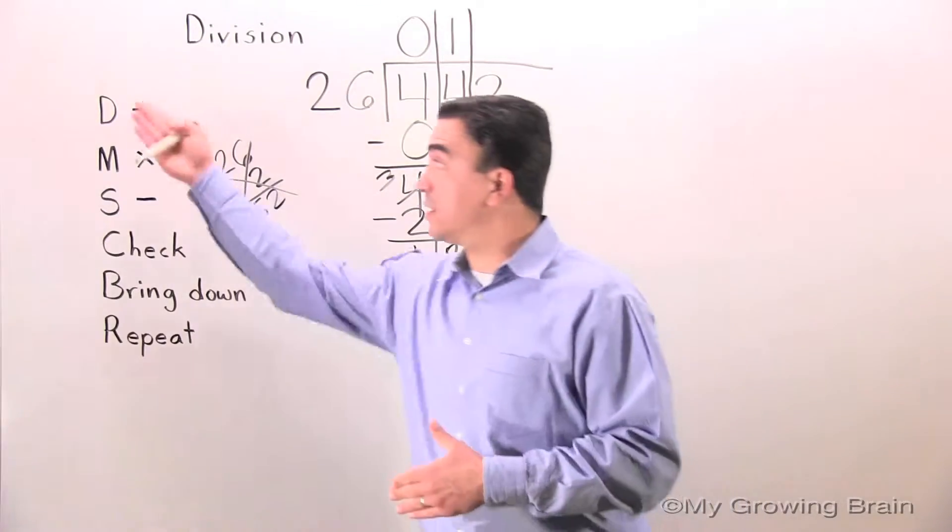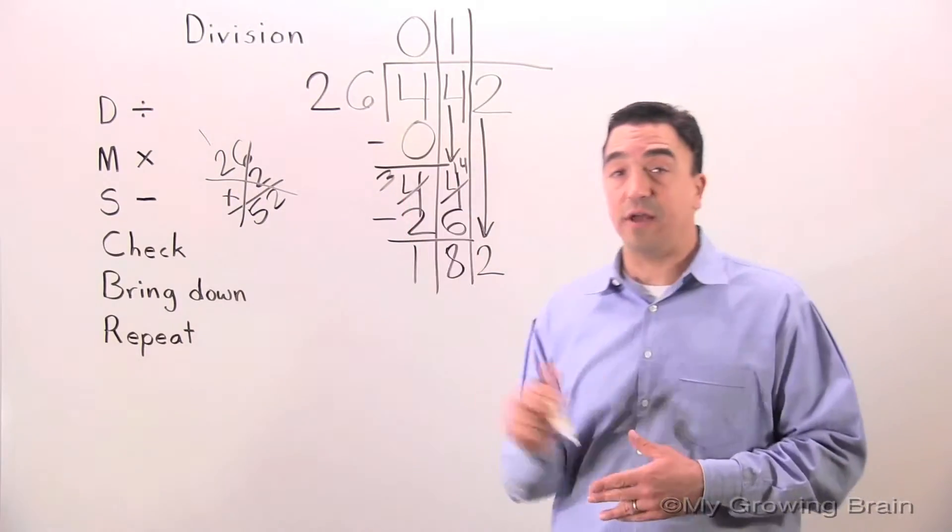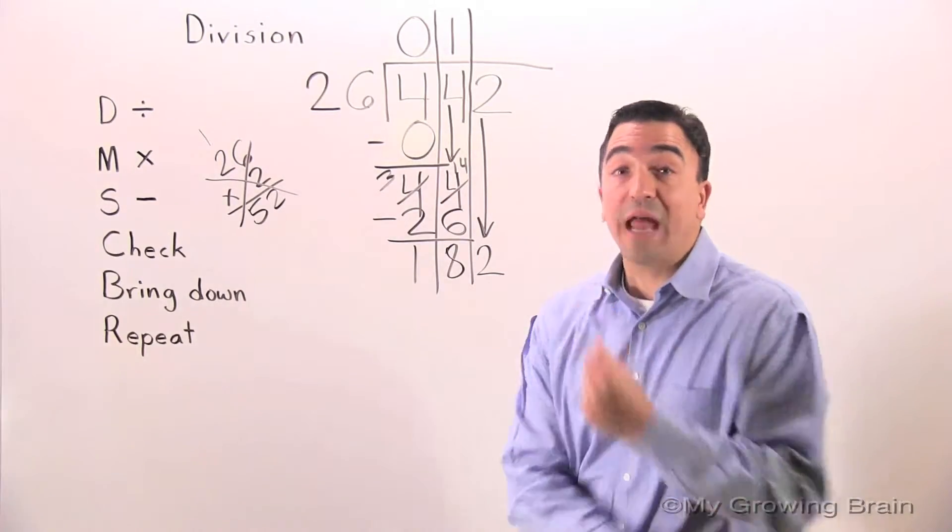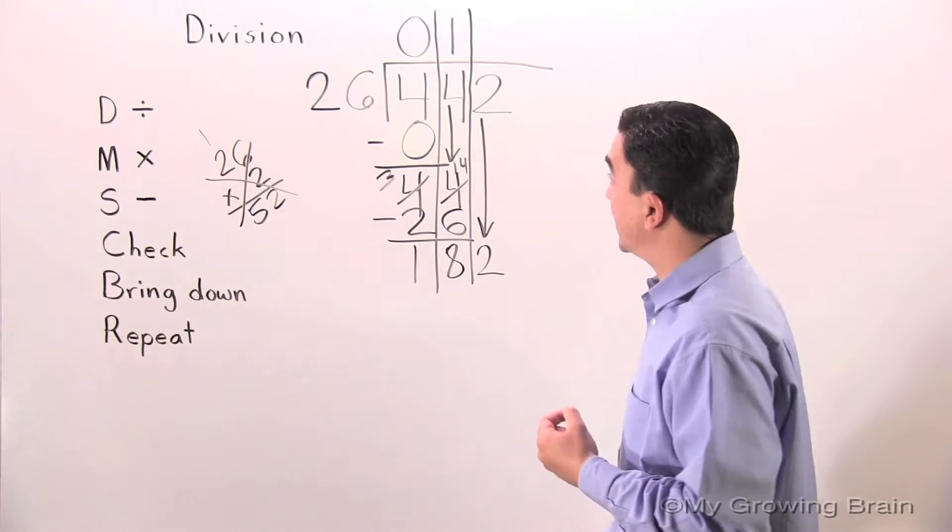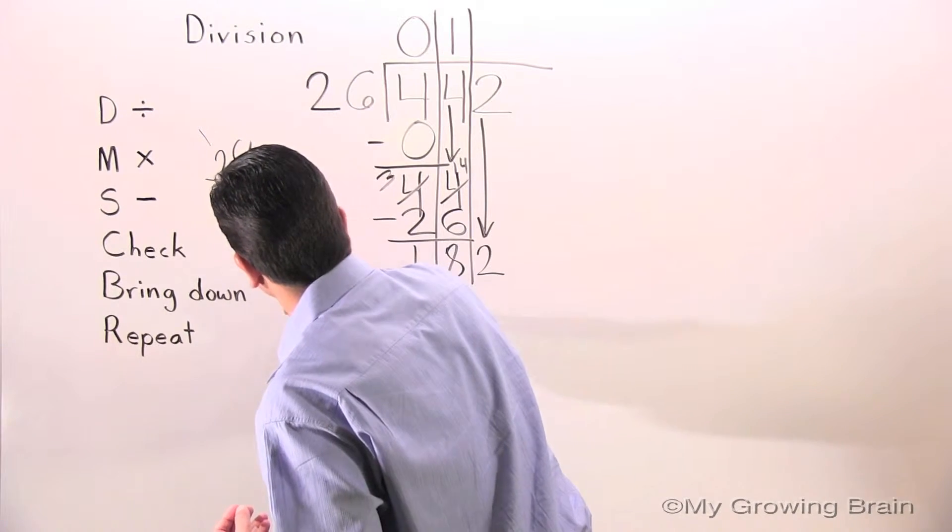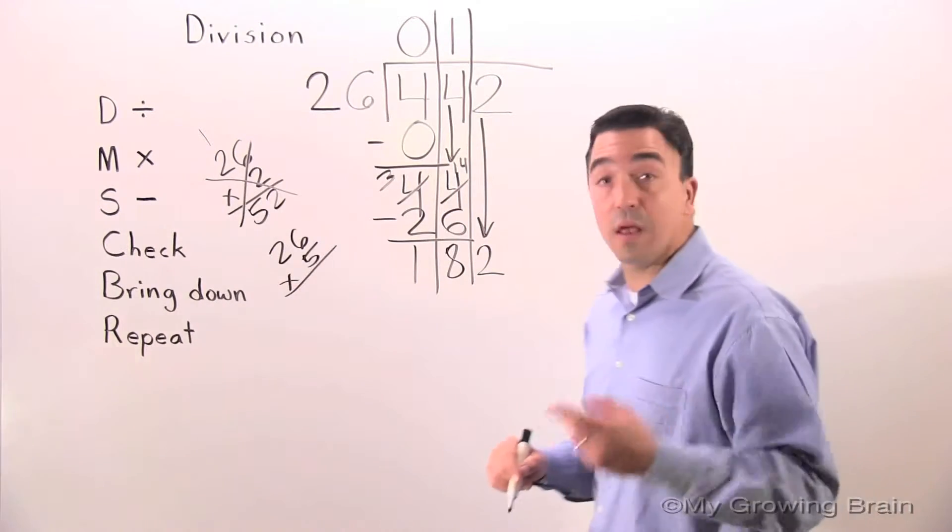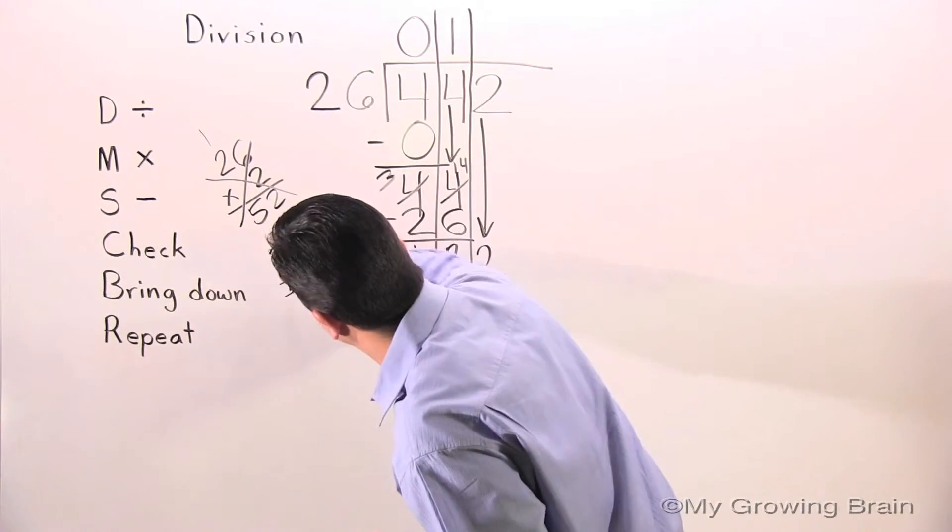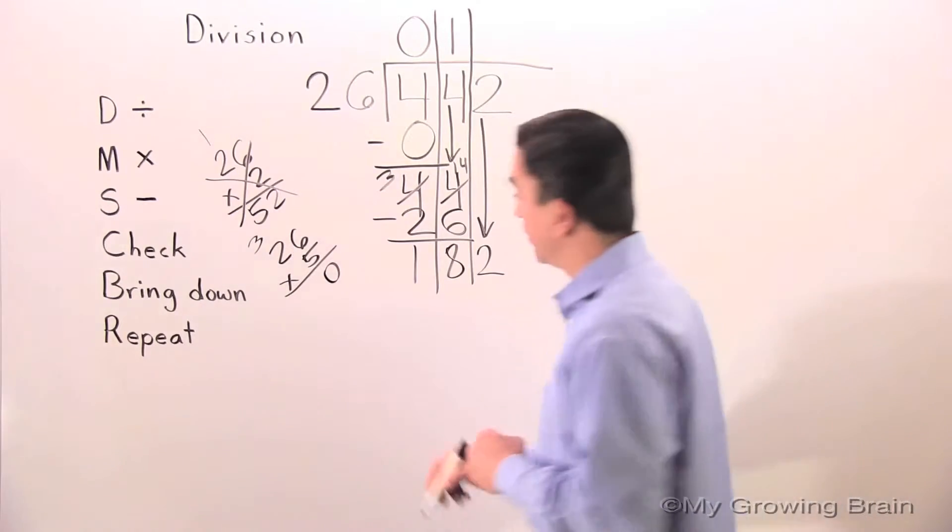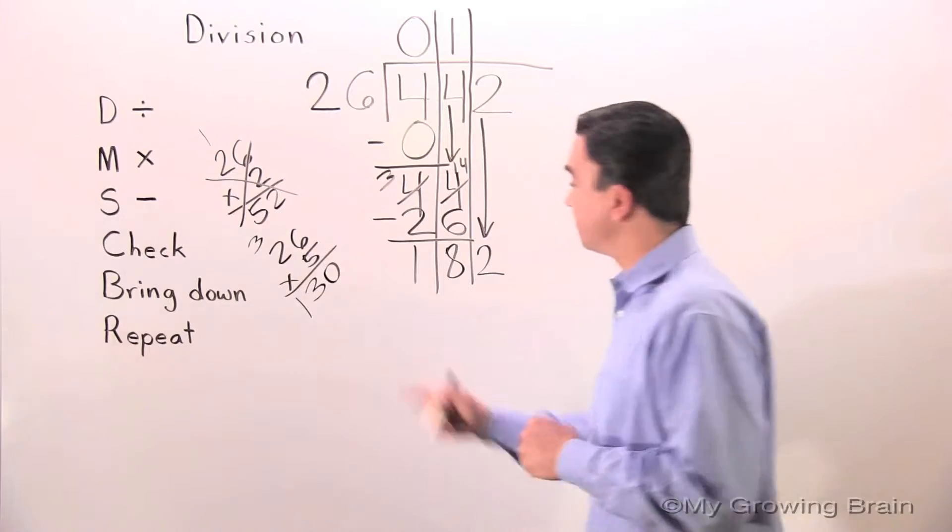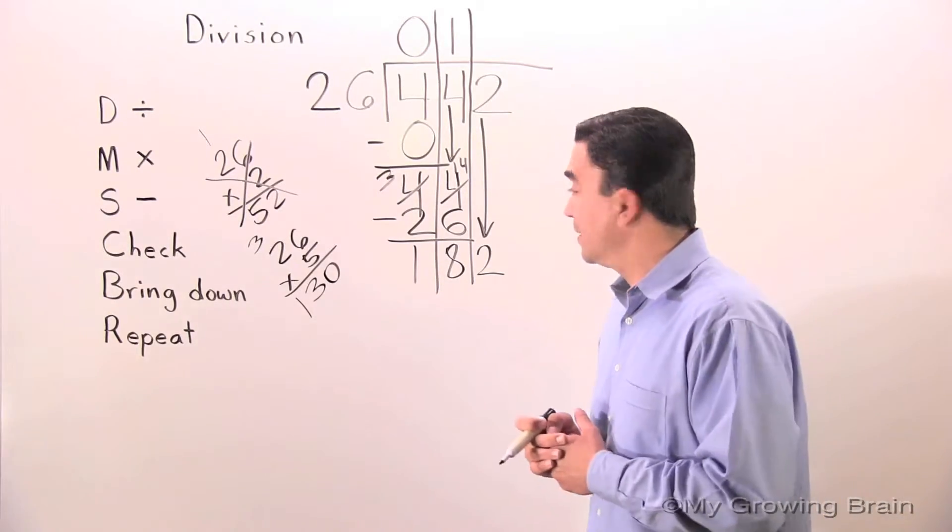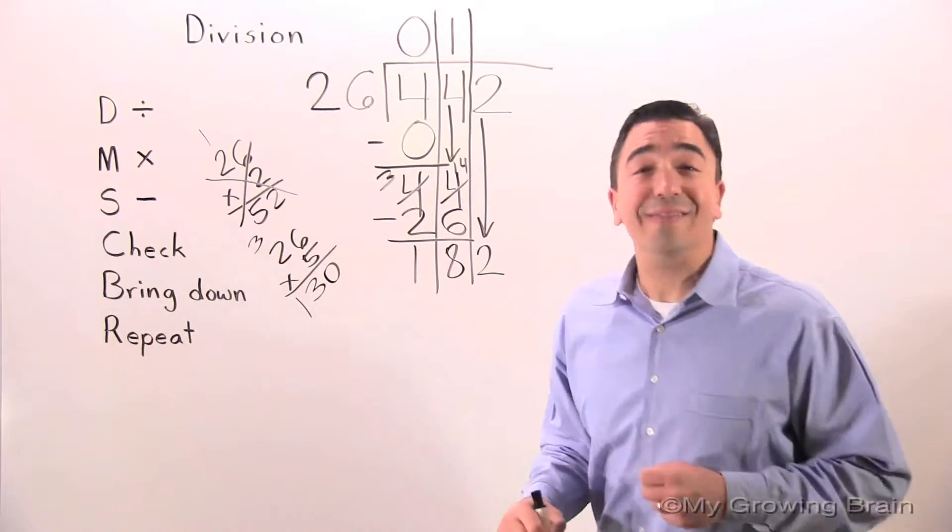Next step is repeat the process back to the top. 182 divided by 26 or 26 into 182. Again, I'm going to have to experiment. How about 26 times 5? 5 times 6? 30. Regroup the 3. 5 times 2 is 10. Plus 3? 13. Not going to work. Let's think of another number. Let's skip 6. Let's go to 26 times 7.